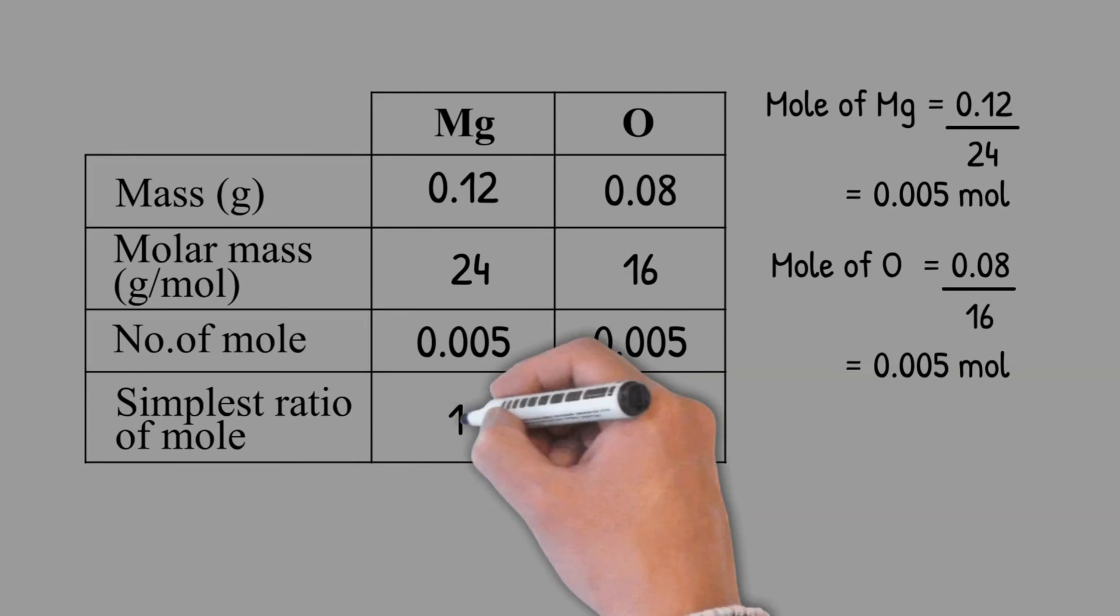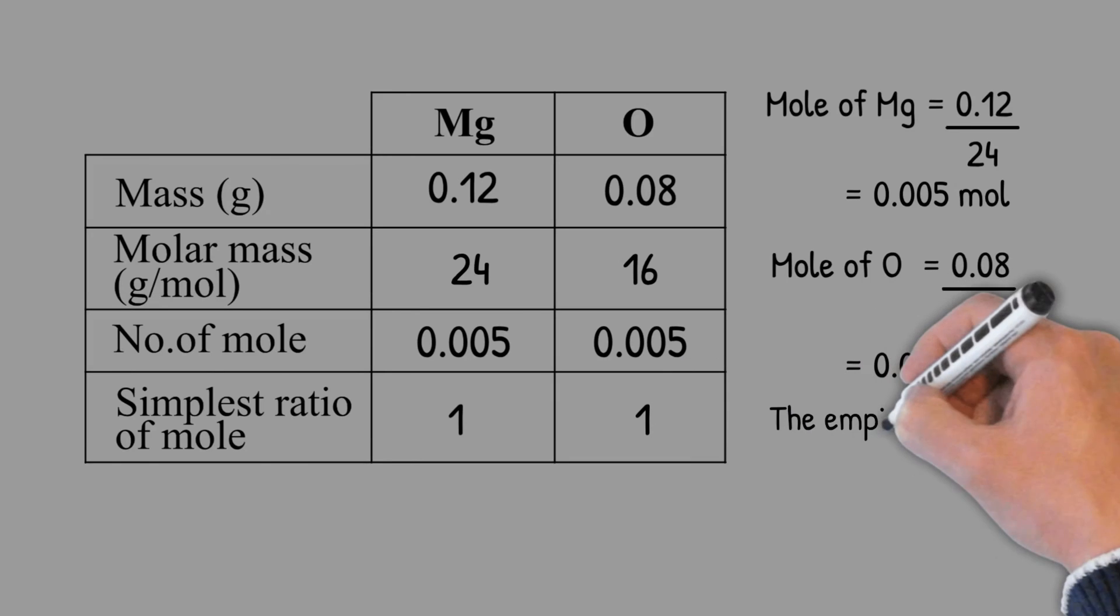The simplest ratio of mole of magnesium and oxygen is 1 to 1. The empirical formula of magnesium oxide is MgO.